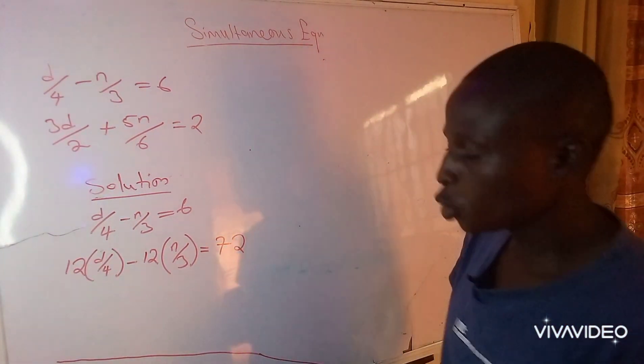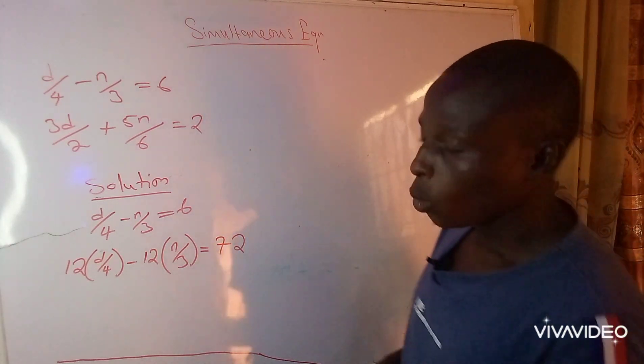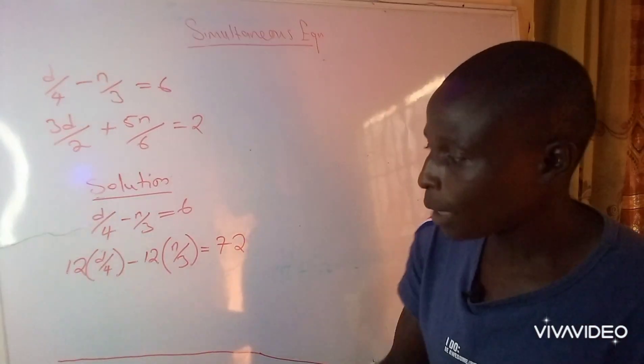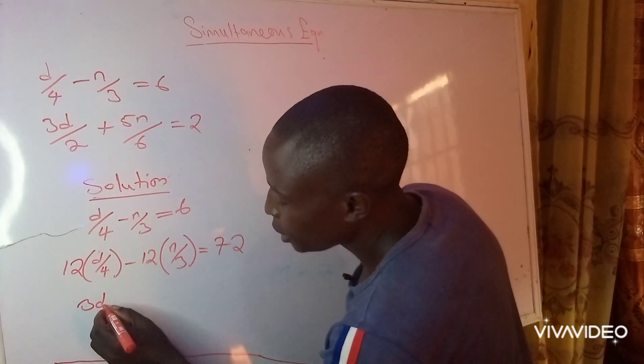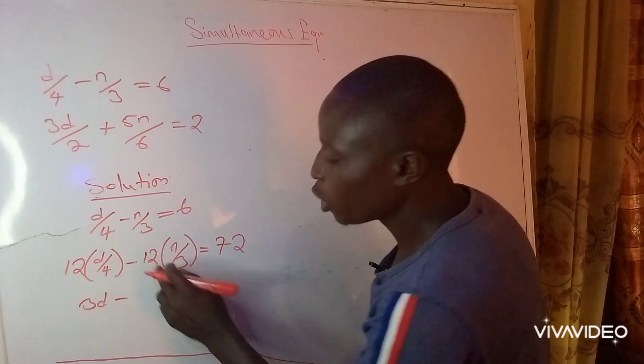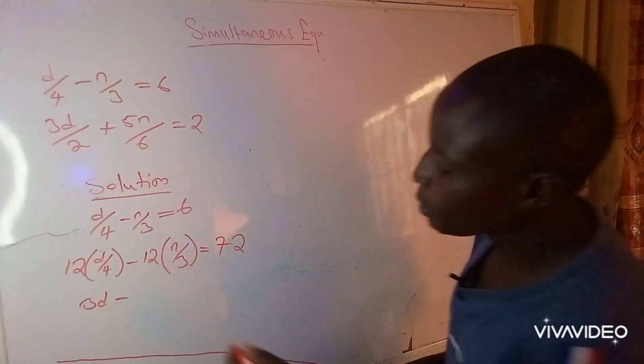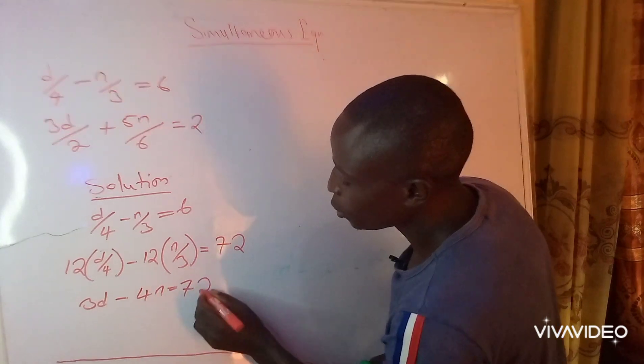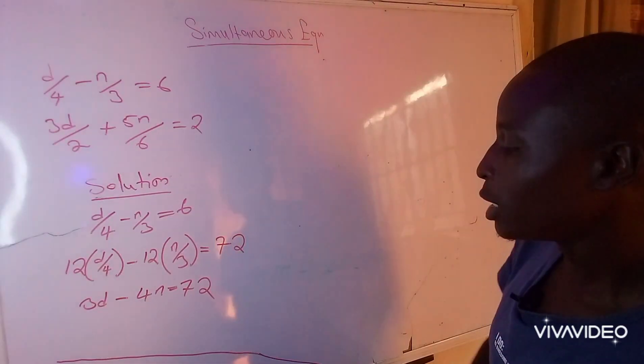Then what are we going to do next? 4 will go into 12 three times, 3 times d gives 3d minus—3 will go into 12 four times, 4 times n is 4n—equals 72. Now we have succeeded in forming one of the two equations as required to solve simultaneous equations.